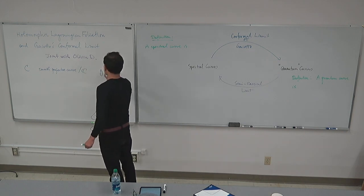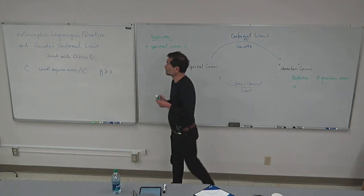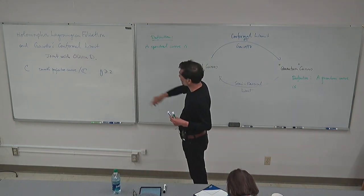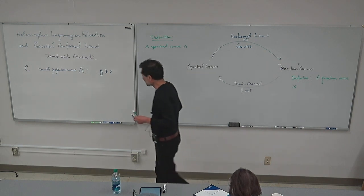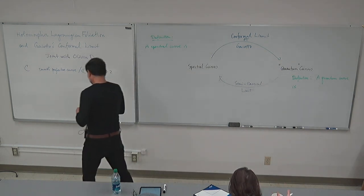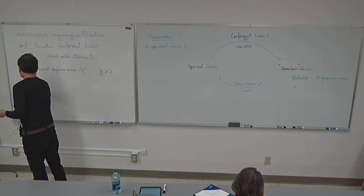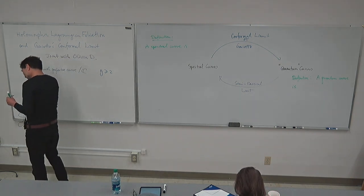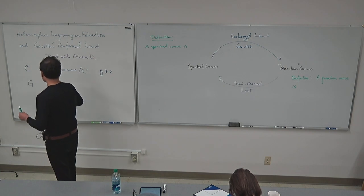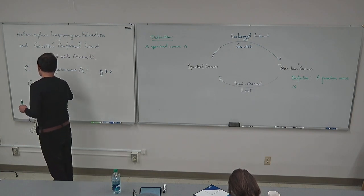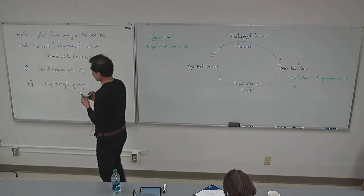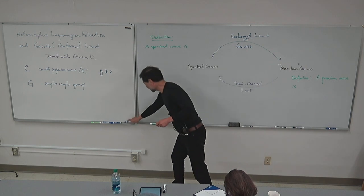One of my grad students and I are working on the genus 0 case with singularity. I would also have to use a complex reductive group, or a simple adjoint group. But most of the time, I just use SL2 as an example.